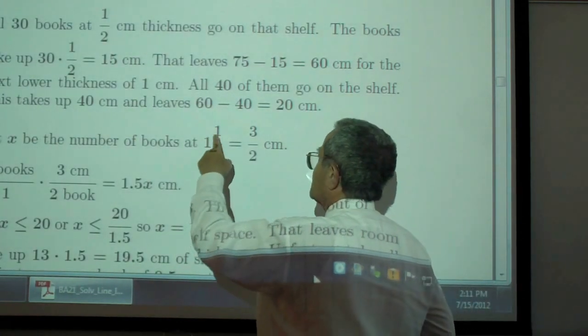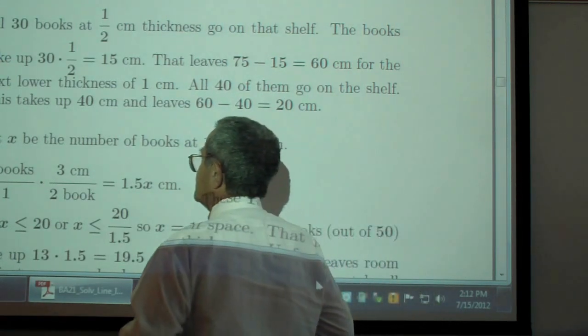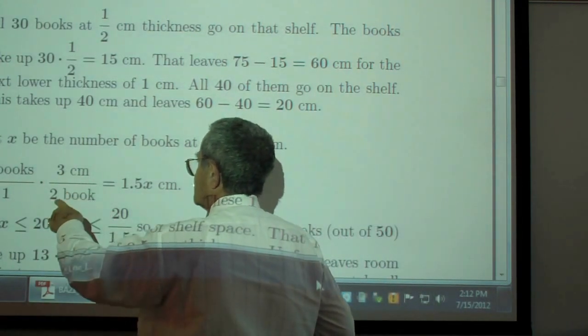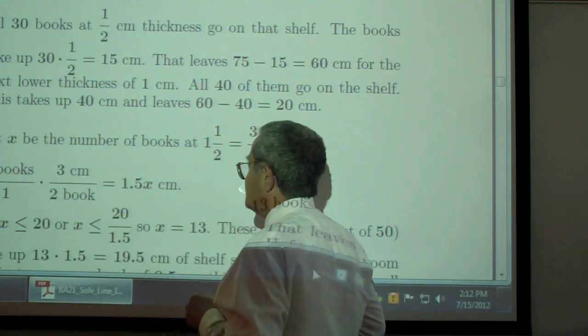Now let X be the number of books at one-and-a-half centimeters that can be filled and one-and-a-half is three over two centimeters per book. You get 1.5X centimeters.